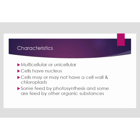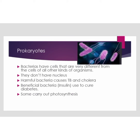Next we have Prokaryotes. Bacteria have cells that are very different from the cells of all other kinds of organisms. Unlike Protista, bacteria do not have a nucleus. The nucleus is basically a unit that controls a cell, and it is absent in bacteria. Harmful bacteria cause diseases like tuberculosis and cholera.